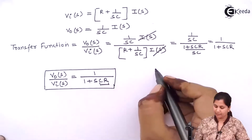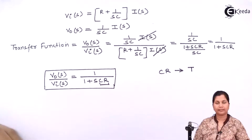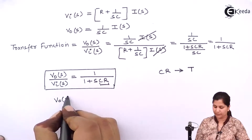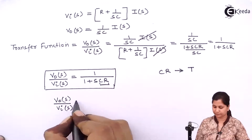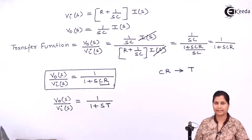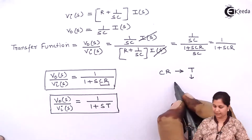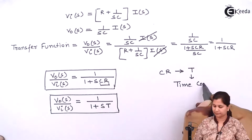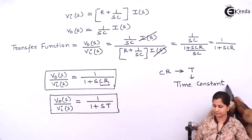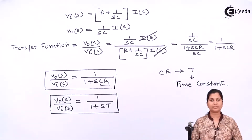This CR is also known as T, that is the time constant of the system. So in some cases, you can also represent this transfer function as 1/(1 + sT). In this way, you can find out the transfer function of a system. Hope you have understood it. Thank you.